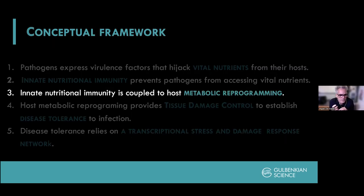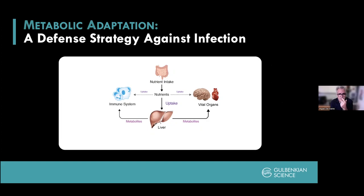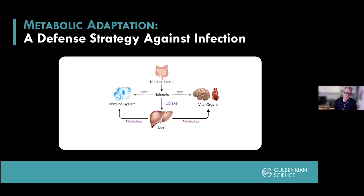I'm going to move on with the idea that nutritional immunity must be coupled to metabolic reprogramming. Before infection, at steady state, we take nutrients from food. These are processed in different organs, but the real metabolic hub is the liver, producing metabolites essential to sustain vital organs such as the brain and heart, and also to sustain the function of immune cells. In the presence of pathogens — viruses, fungi, protozoan parasites or bacteria — pattern recognition receptors sense the microbes, and resistance mechanisms including innate nutritional immunity become operational.